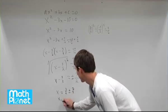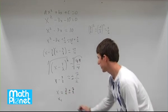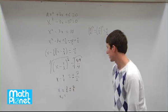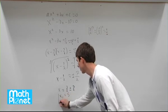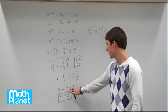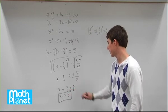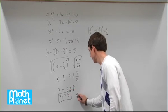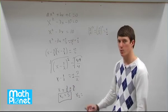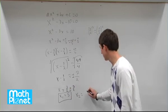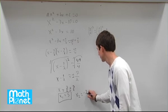So x1 equals 3 halves plus 7 halves. 3 plus 7 is 10. 10 divided by 2 is 5. So we have x1 equals 5. Now we have 3 halves minus 7 halves. So x2 equals 3 halves minus 7 halves is negative 4 halves. Negative 4 divided by 2 is just negative 2.